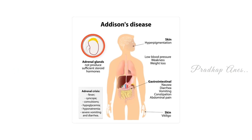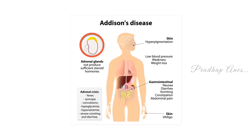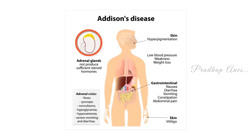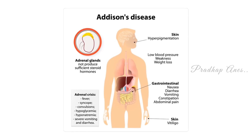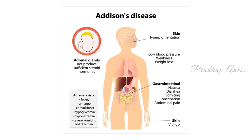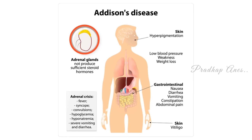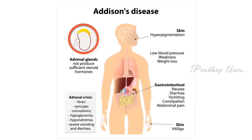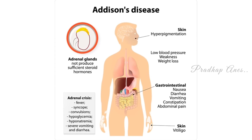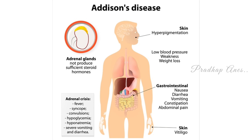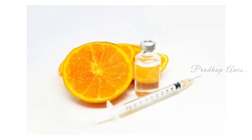An Addisonian crisis is a life-threatening situation that results in low blood pressure, low blood levels of sugar, and high blood levels of potassium. Therefore, etomidate can lead to an increase in the rate of mortality. Vitamin C supplements can help prevent adrenocortical suppression.